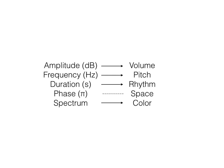There are five basic parameters of sound: amplitude, frequency, duration, phase, and spectrum. We perceive them as volume, pitch, rhythm, space, and color. In upcoming units, we'll talk about how to create sound using and changing these parameters.